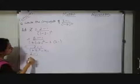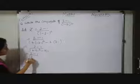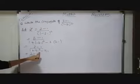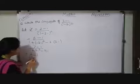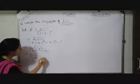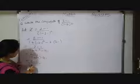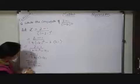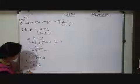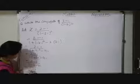2 minus i upon 1 plus i square that is minus 1. So, here 4 into minus 1 minus 4i. So, 2 minus i upon 1 minus 4 minus 4i. So, we have 2 minus i upon minus 3 minus 4i.